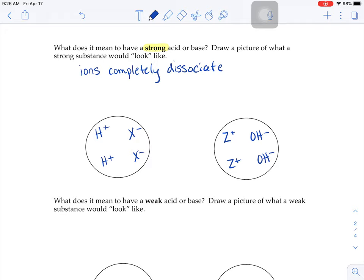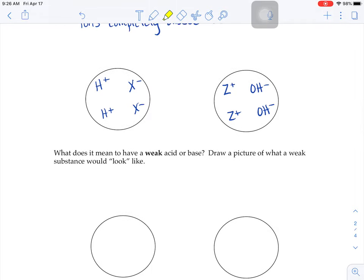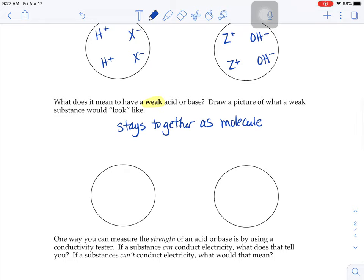Strong means break it up into its pieces. If you have a weak substance, the opposite of strong, that means that the substance stays together as a molecule. So if HX was a weak acid, it would be HX together, not broken up like you see above. If you had a weak base, the Z and OH would stay together, not broken up.